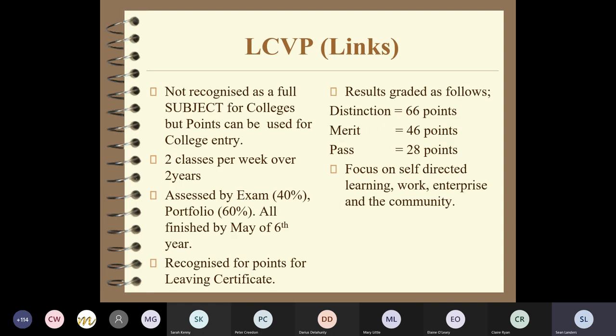The Leaving Certificate Vocational Program, or LCVP Links, is not recognised as a full subject for college entry - you still need six subjects and can have links on top. However, it does provide points. It's two classes per week over two years - fifth and sixth year. It's assessed by an examination worth 40%, which usually takes place the first Wednesday in May of sixth year.